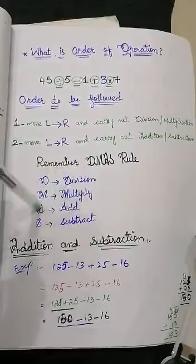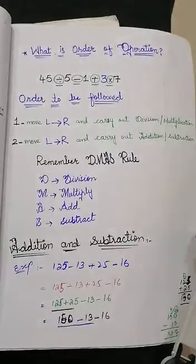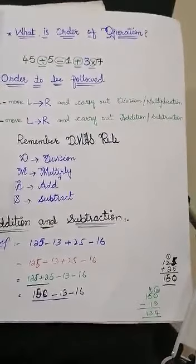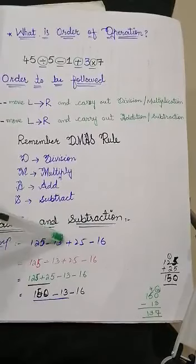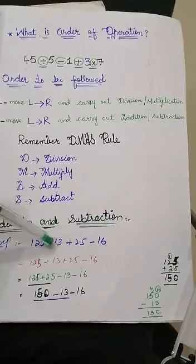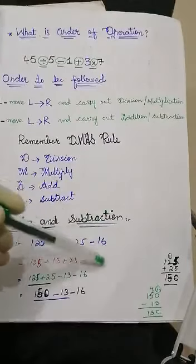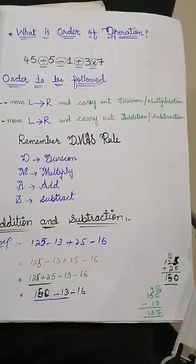Remember the DMAS rule: D stands for Division, M for Multiplication, A for Addition, S for Subtraction. Students, first of all we should learn to solve sums involving addition and subtraction. The example is: 125 minus 13 plus 25 minus 16. There are alternating operations — minus, plus, and minus.